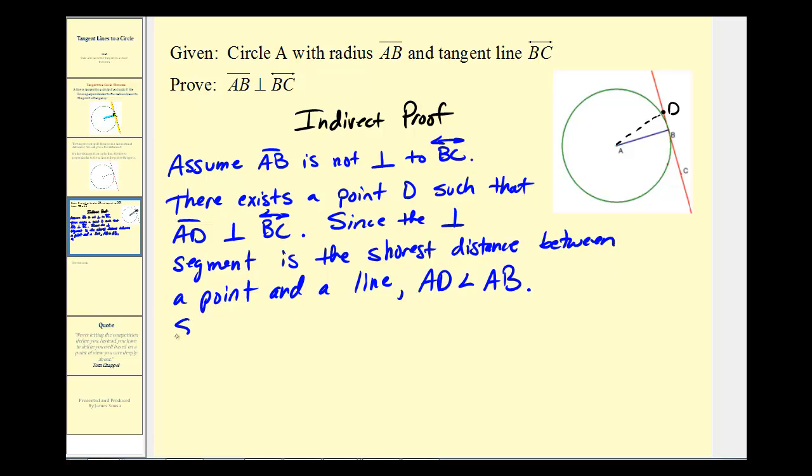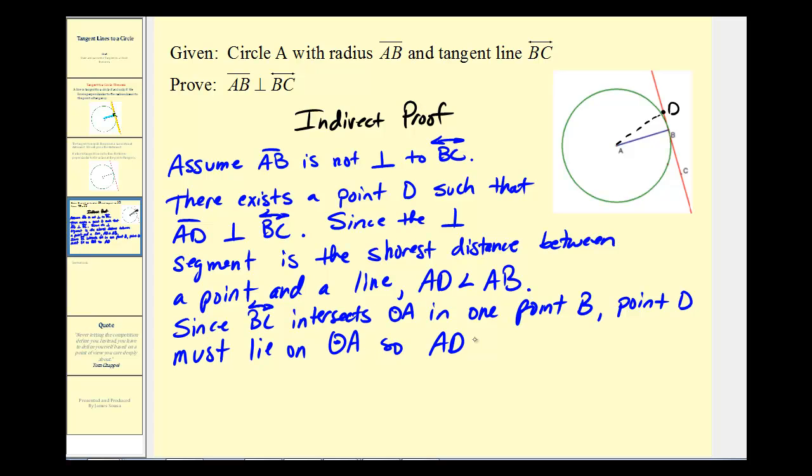But now, since line BC intersects circle A in one point B, point D must lie outside circle A, so the length of AD is greater than the length of AB.